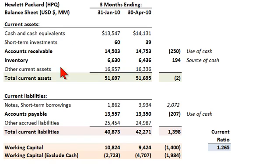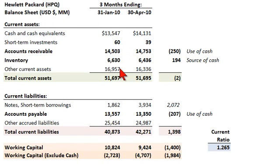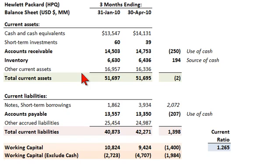We have current assets here in the upper panel and current liabilities in the lower panel. I like to think of this as the left-hand side and right-hand side of the balance sheet, but it's all current — both current assets and liabilities. Current generally refers to accounts that are either going to be converted into cash within one year, or paid within one year, or if not within one year, one operating cycle.